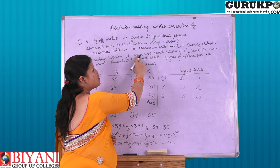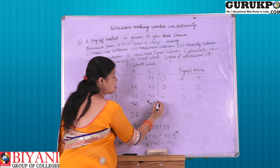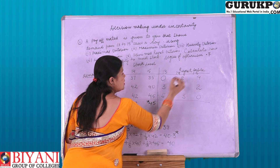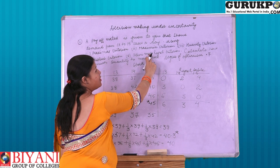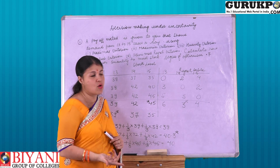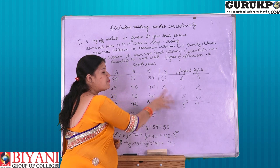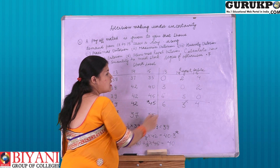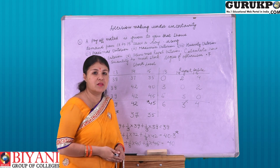After framing the regret table, we select the maximum entry level from each stock level. The maximum regret for 13 stock level is 6, for 14 it is 3, and for 15 it is 4. From these maximum regret values, we select the minimum regret, that is 3. A decision maker would always like to minimize their loss. So, as per Minimax regret criteria, the decision maker would like to stock 14 units in the stock level, minimizing the loss to 3 rupees.